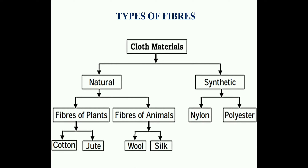In 6th class we learned about types of fibers: natural fibers and artificial fibers. Natural fibers are again divided into fibers of plants and fibers of animals. Examples of plant fibers are cotton and jute. Examples of animal fibers are wool and silk.